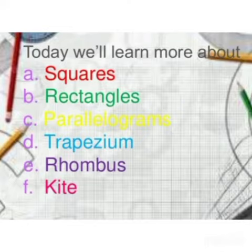Quadrilaterals are of 6 types: square, rectangle, parallelogram, trapezium, rhombus, and kite.